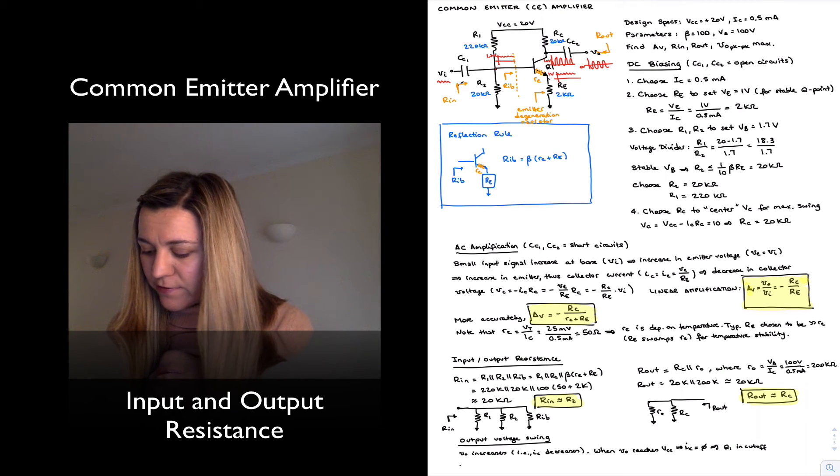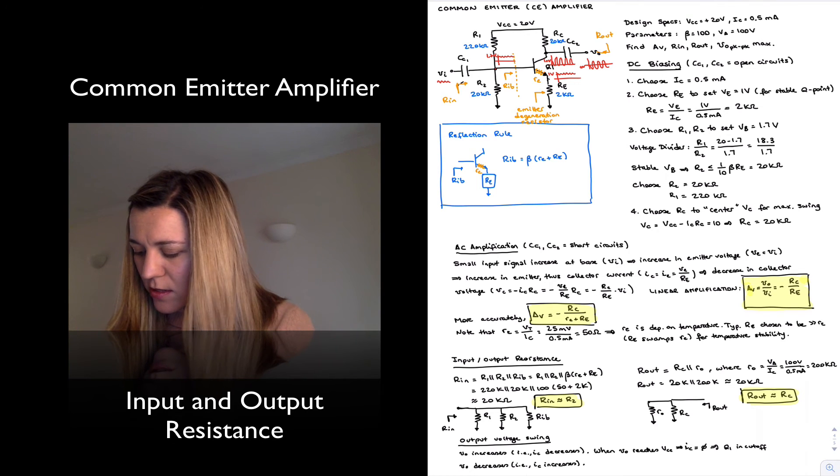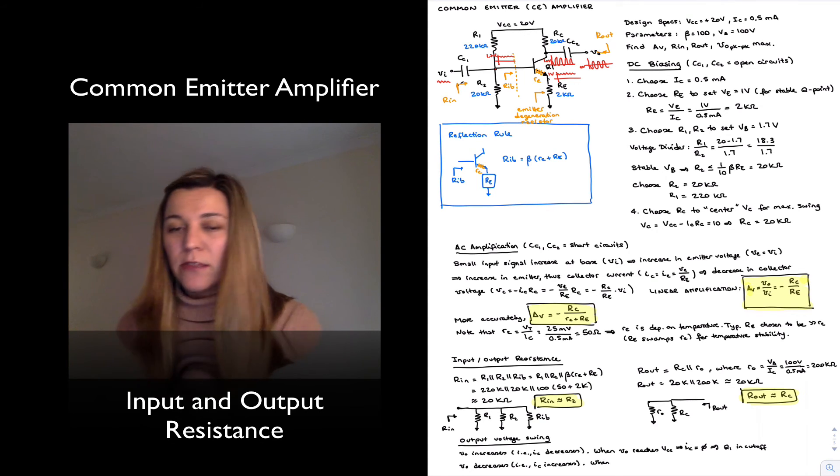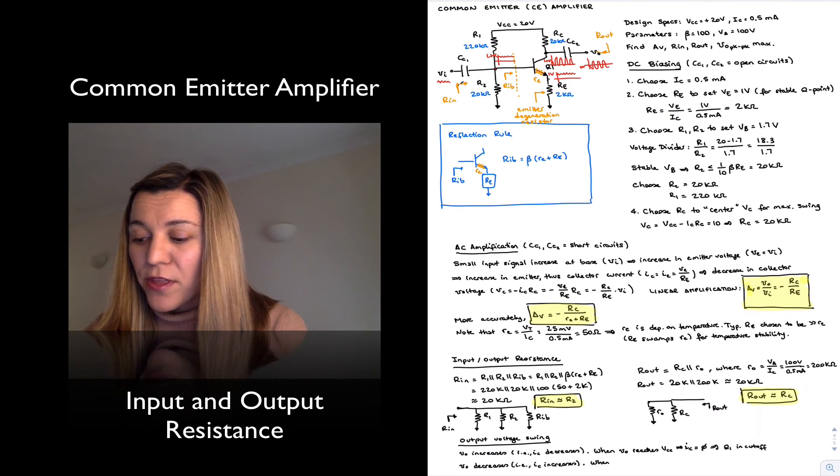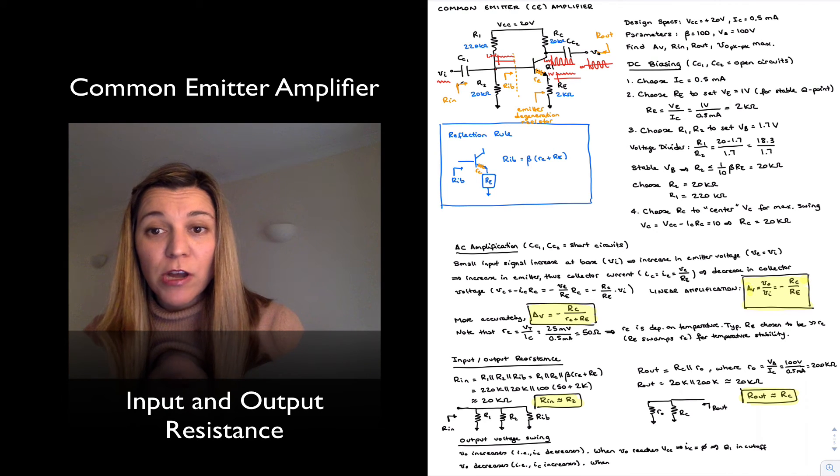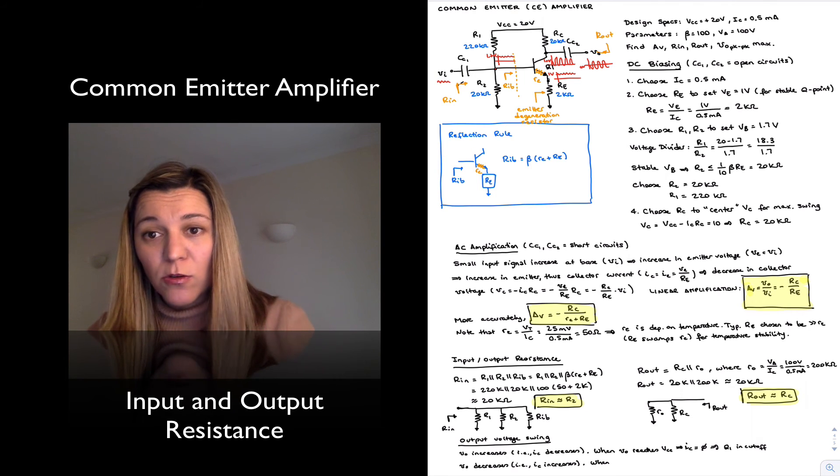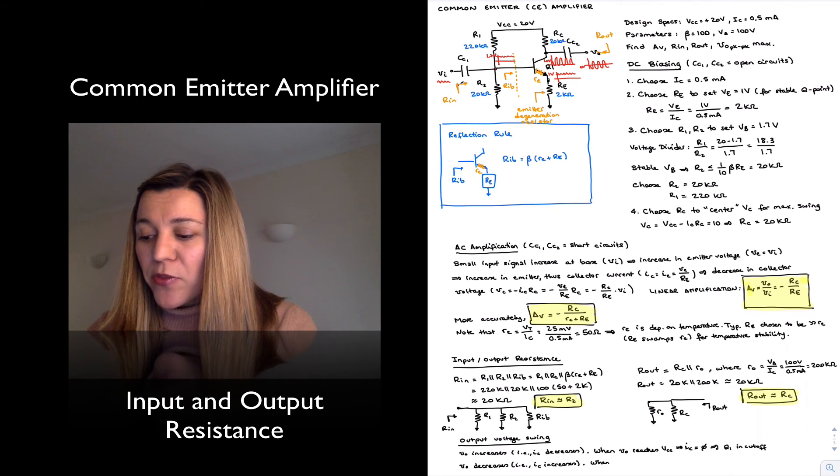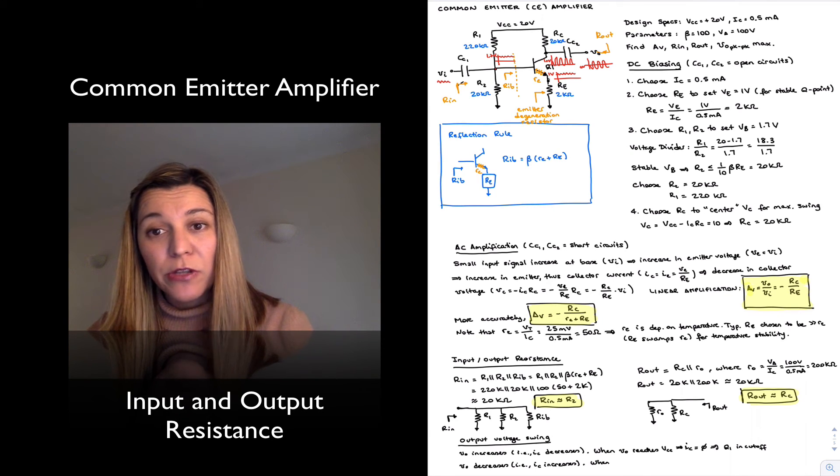And complementary, if the output voltage decreases or it swings in the negative direction, that's because IC is increasing. And the farthest down that we can go, we need to keep into consideration the following: for one thing, we need one volt drop across Re—that's how we're setting our DC bias point to have Ve set to one volt, so we cannot go lower than one volt. But then we also need to have at least 0.3 volts across the collector to emitter terminals in the transistor to keep the transistor out of saturation.